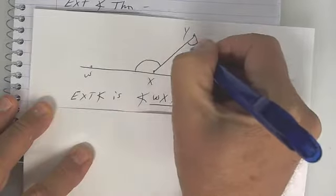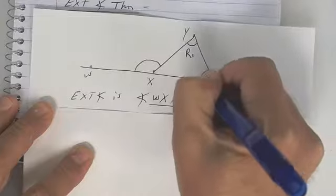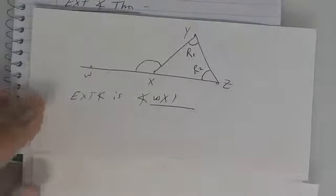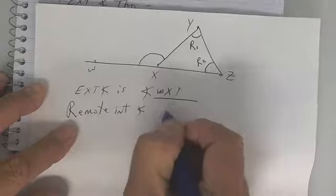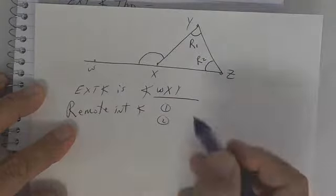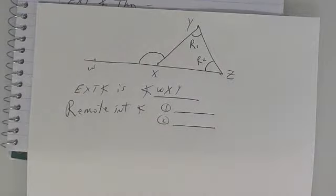This one right here is called a remote interior angle. And so is this one. So write that down. Remote interior angles. And there's two of them. I want you to name both of those. Name those two remote interior angles. What are they? Name those two angles.